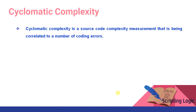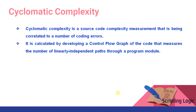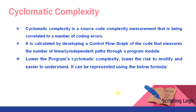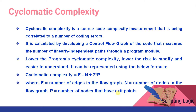Cyclomatic complexity is a source code complexity measurement correlated to the number of coding errors. It is calculated by developing a control flow graph of the code that measures the number of linearly independent paths through the program model. Lower cyclomatic complexity means lower risk to modify and easier to understand. The formula is: Cyclomatic Complexity = E minus N plus 2 times P, where E is the number of edges, N is the number of nodes, and P is the number of nodes that have an exit point.